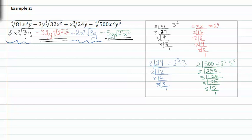We can now add the like terms together to get five x cubed root of three y, and negative eleven y cubed root of four x squared.